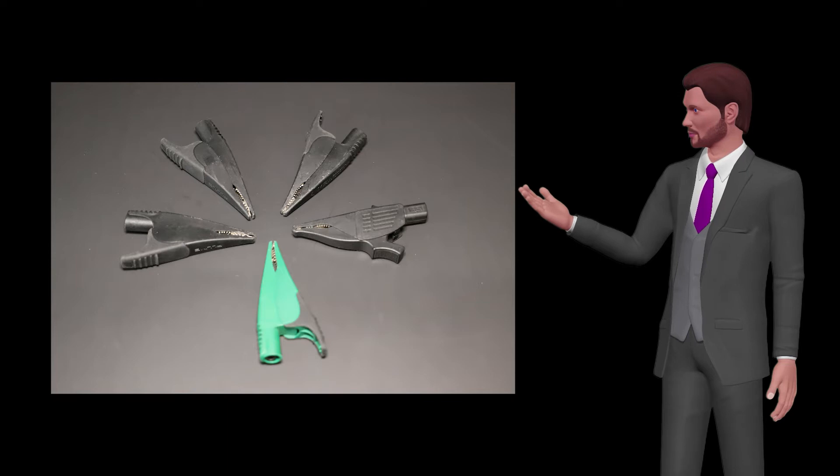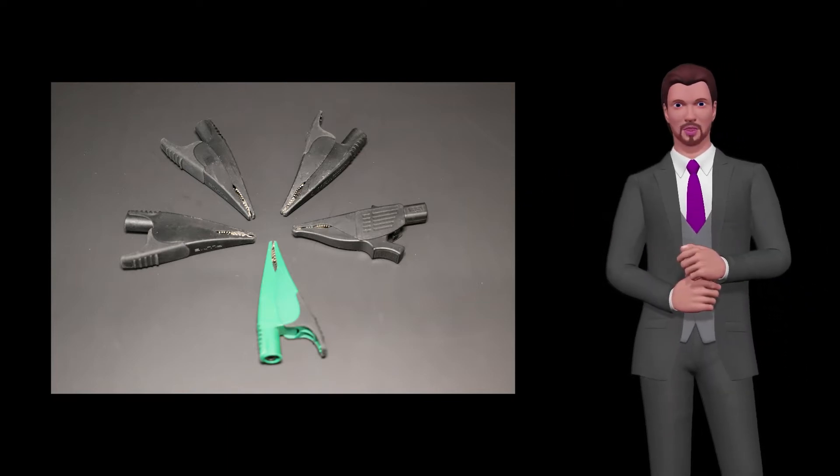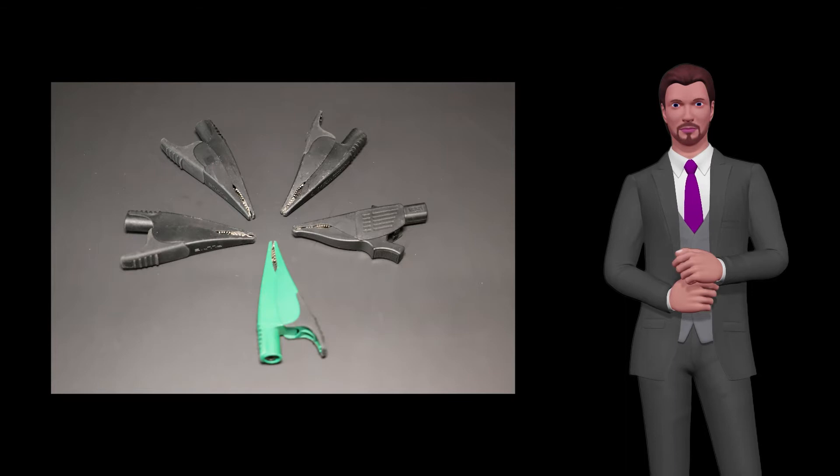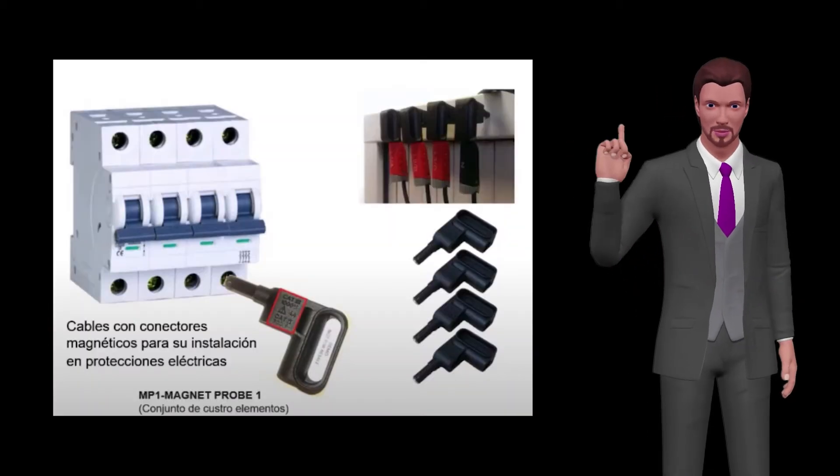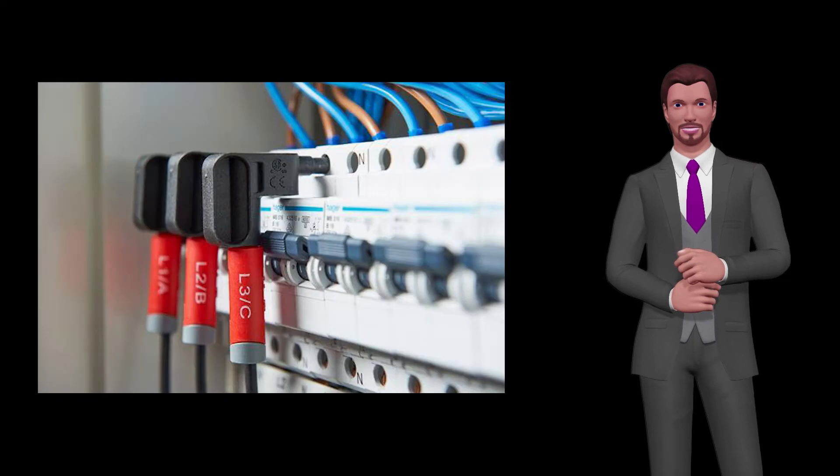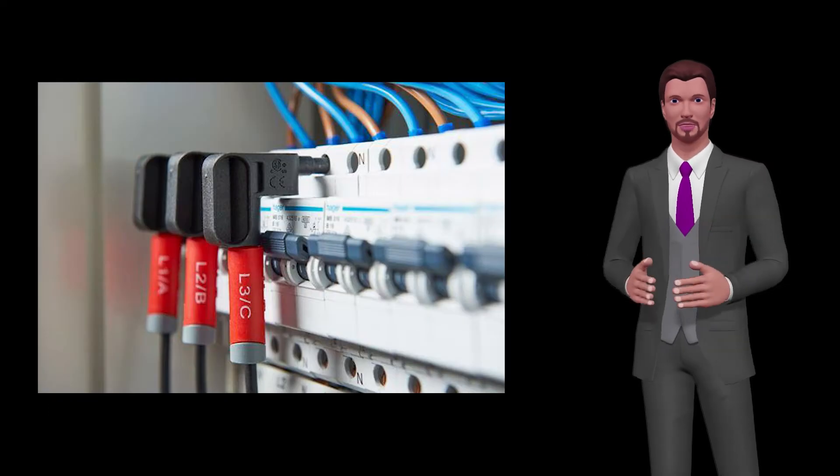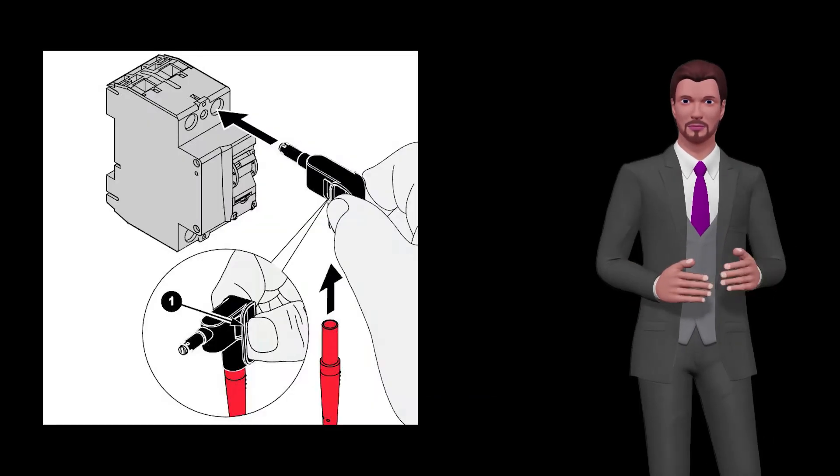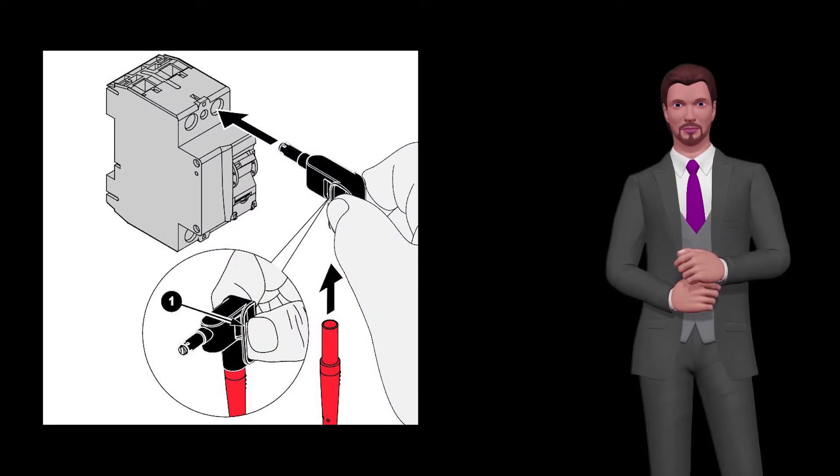If you are measuring on thick cables or copper busbars, the included alligator clips are a good way to connect the voltage measurement cables. If you are going to measure in a small electrical cabinet where there is little space, I suggest you get a set of magnetic tips that you can insert into the screws of the protections. They have a magnet strong enough to make a good electrical contact.